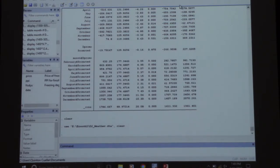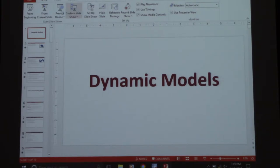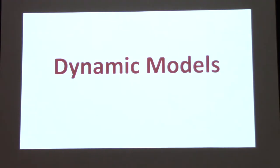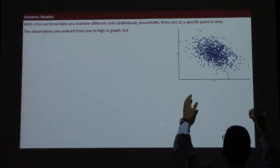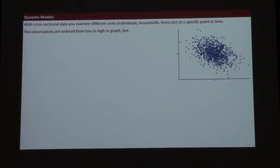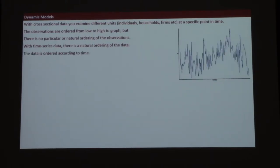What we're going to look at is called dynamic models. The word dynamic comes from time — we're looking at effects over time. With cross-sectional data, we look at scatter diagrams and try to fit curves: we order the x-axis from low to high and see how y changes when x changes. With time series data, we have a natural ordering of time, and we've already looked at variables over time.